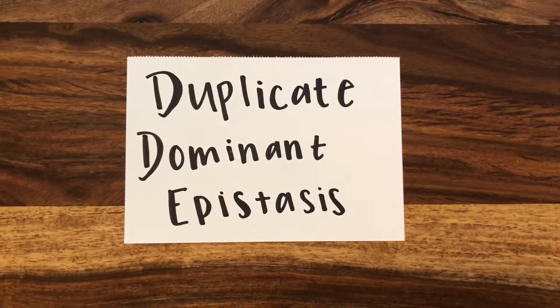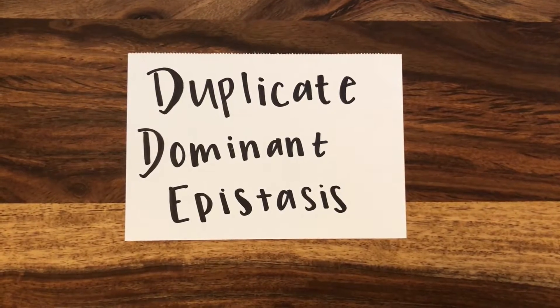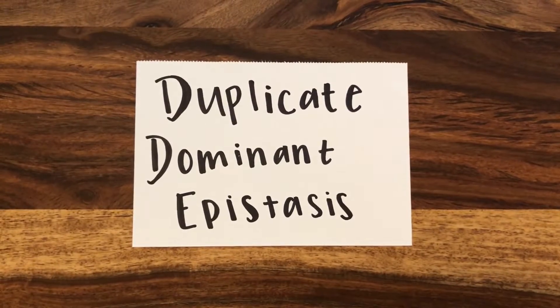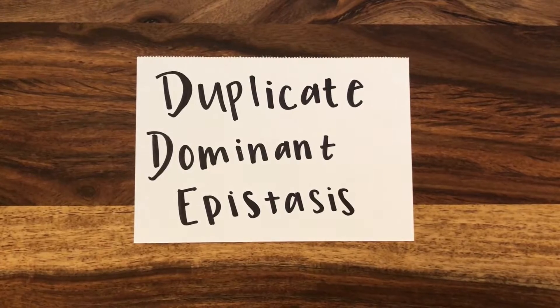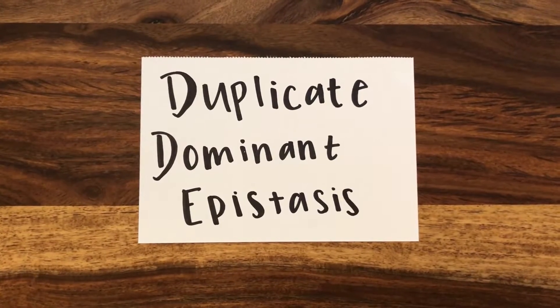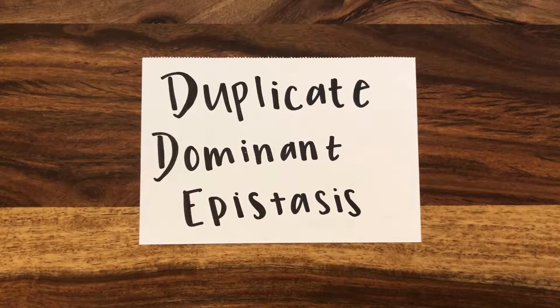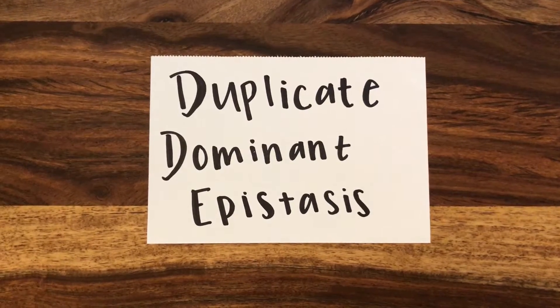Today we're going to be discussing duplicate dominant epistasis. Epistasis is when two loci contribute to the expression of a particular phenotype in an unexpected way. What is unexpected in epistasis is that one allele expression at one locus can mask or alter the outcome of allele expression at another locus.